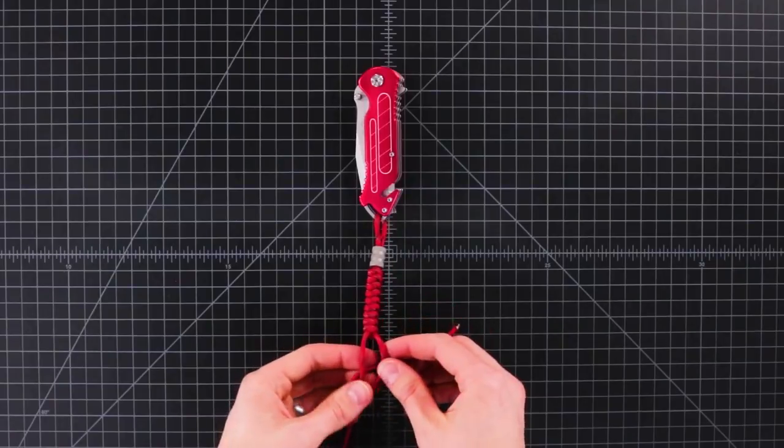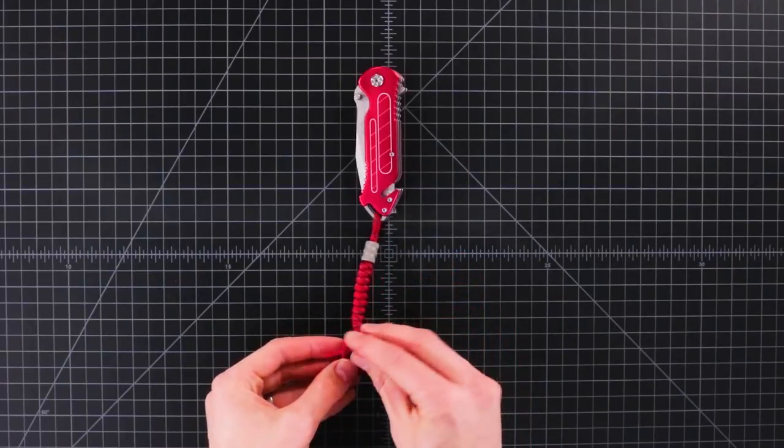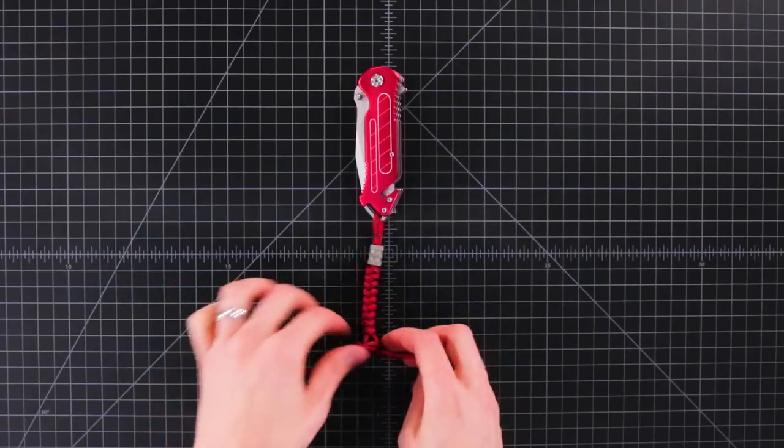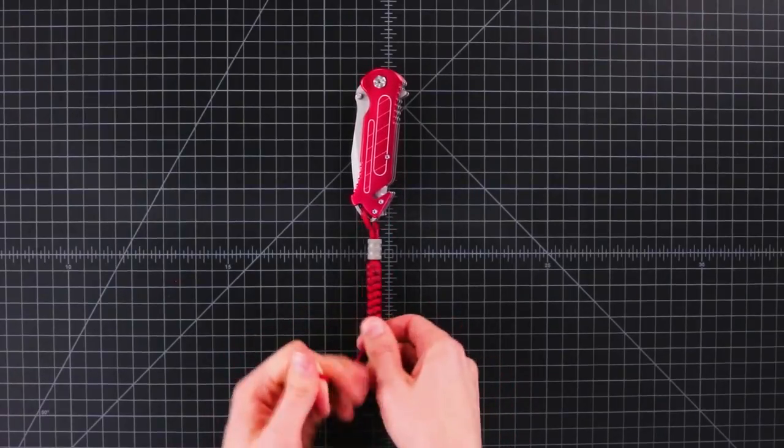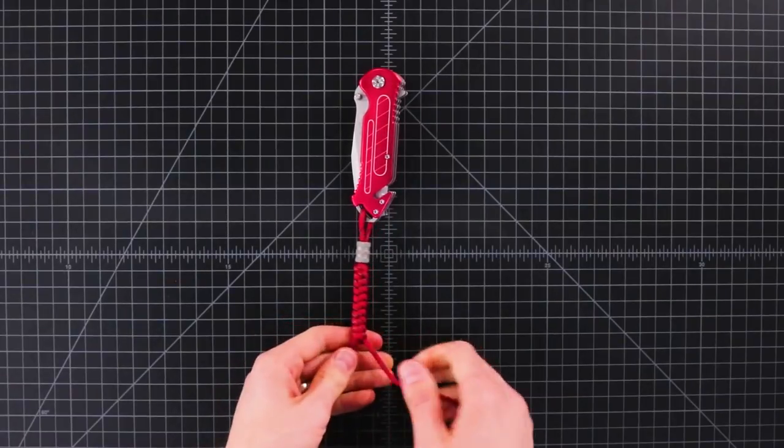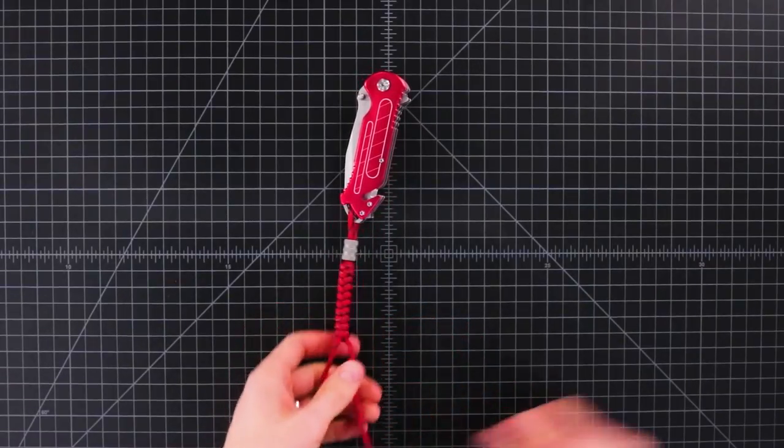So as I'm finishing up this last knot here, I'm just going to pull that tight. Pull on each side individually to really snug it down.